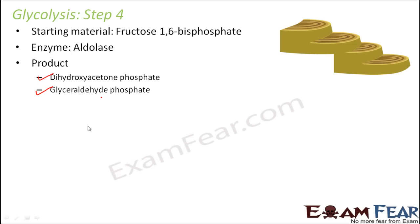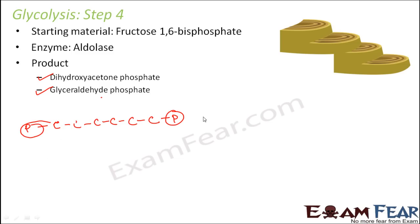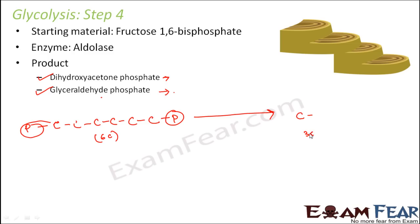Let us see what exactly happens here. The starting material was fructose 1,6-bisphosphate, which has six carbons and two phosphate groups. This gets changed into two products, and one interesting fact is that these two are isomers of each other — they have the same molecular formula, just different arrangements or structures. Each of them is a three-carbon compound, so basically the six-carbon compound gets split into two three-carbon compounds.